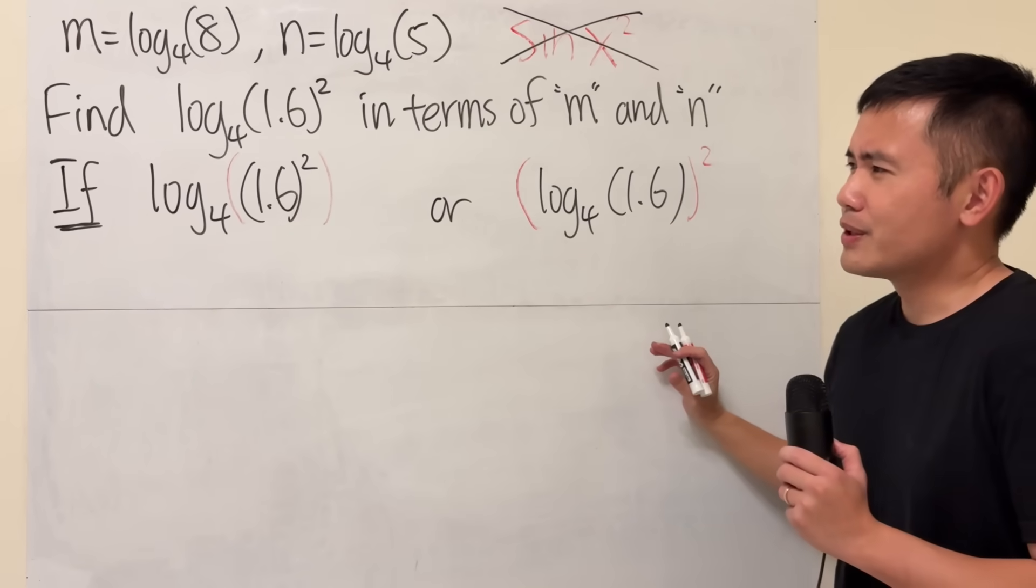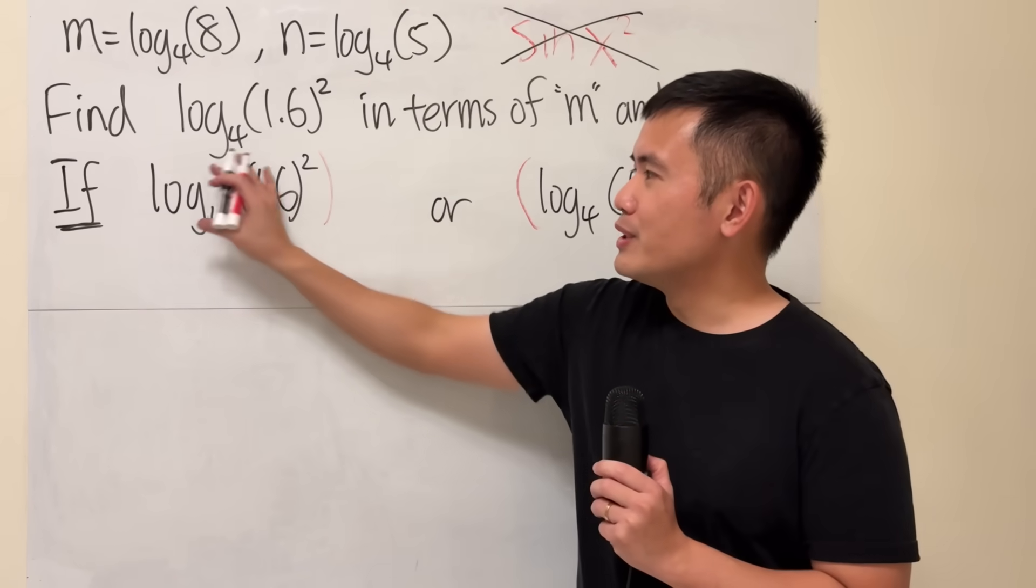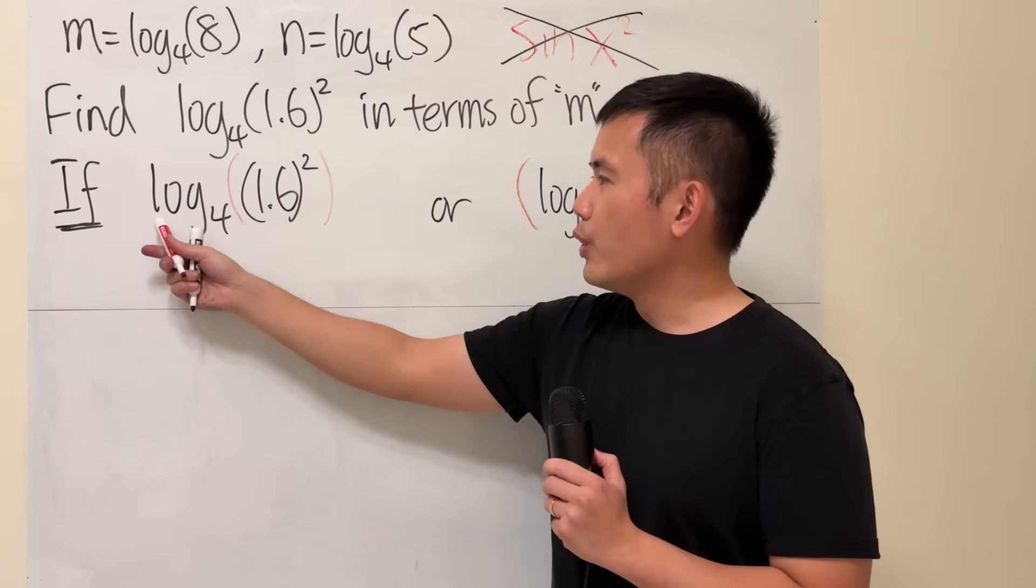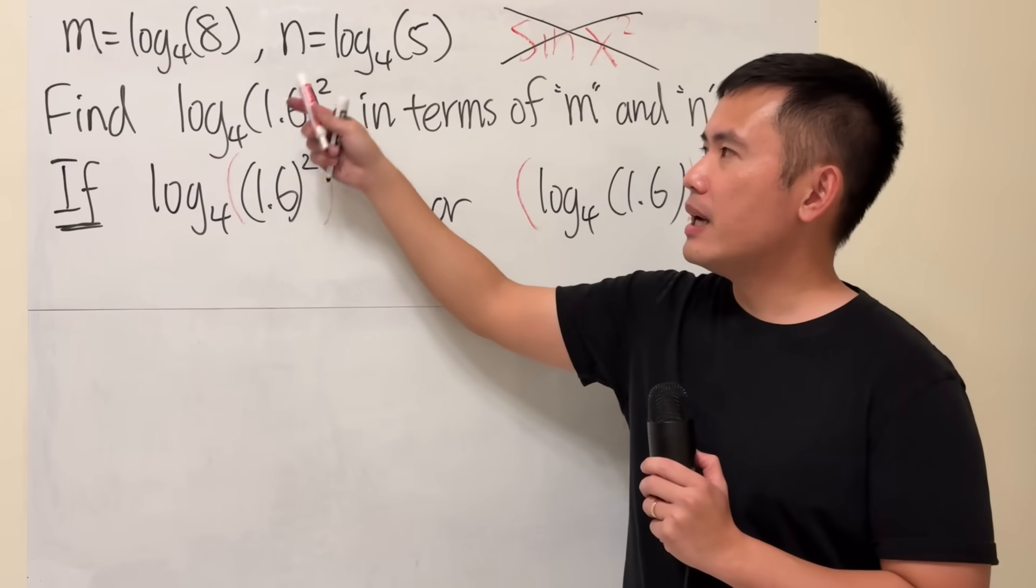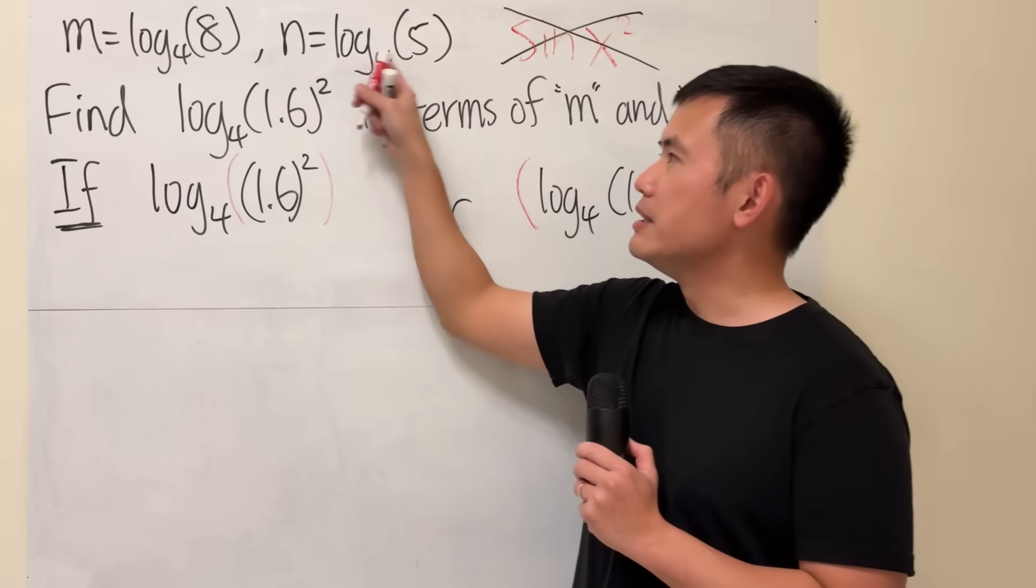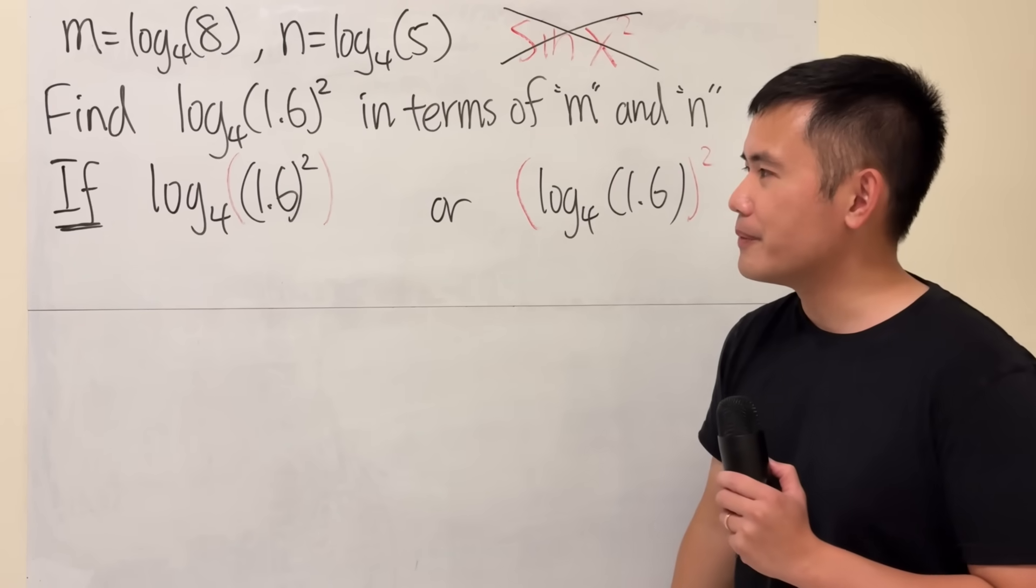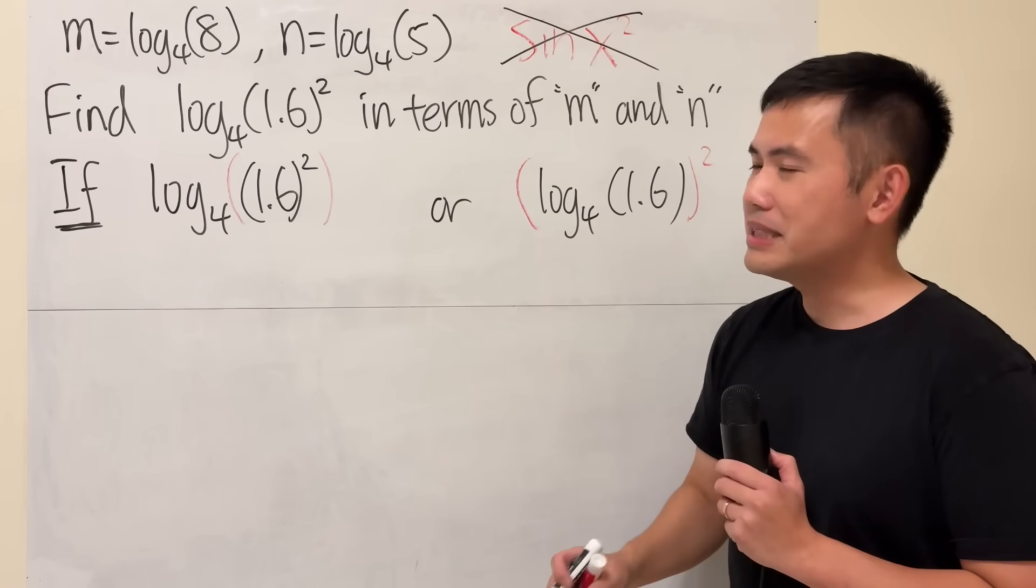So let's go ahead and figure out what if they have written it like this, what would be the answer? Right here we're going to write this in terms of m and n, and m is this and n is that. We're not supposed to work it out like the usual way we use a calculator.